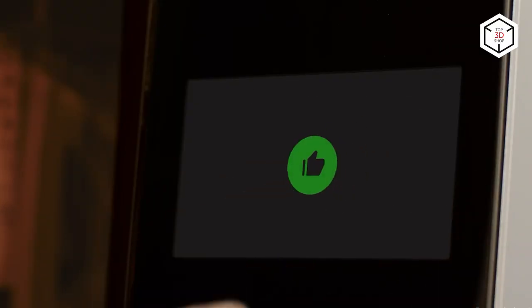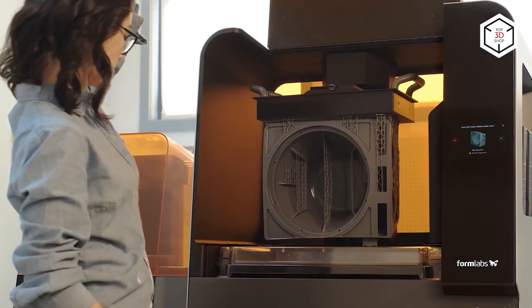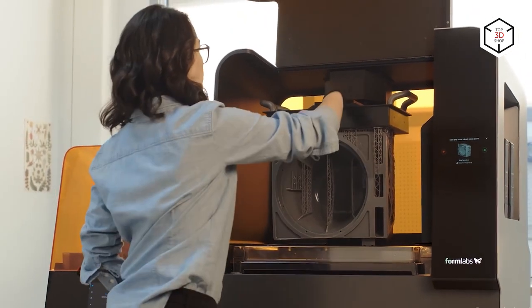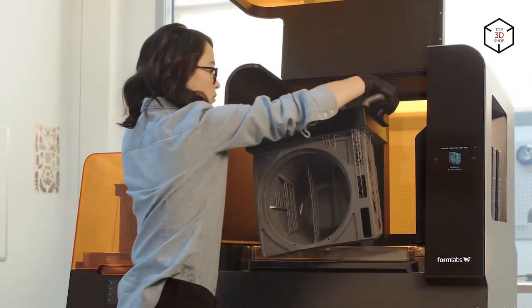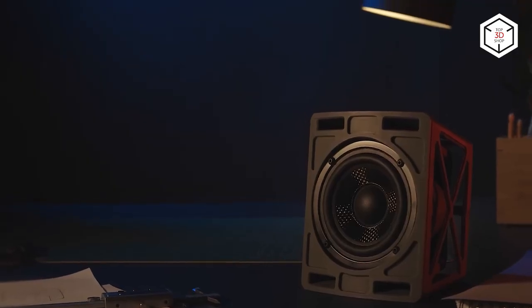The major difference between the two models is the build volume, which is 145 by 145 by 185 millimeters for the Form 3 and 335 by 200 by 300 millimeters for the Form 3L. Both printers can work with various resin types, which increases their versatility and allows their use in different industries.